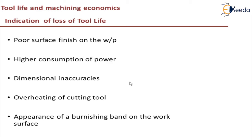The second indication is higher consumption of power. Because of a lot of friction forces, the power consumption will be very high. Then there will be dimensional inaccuracies — you will not be getting whatever accuracy is required as given in the drawing. Next, overheating of the cutting tool: because of higher friction, overheating of the cutting tool takes place. There may also be burnishing bands — that is, burning bands on the workpiece surfaces because of very high temperature.